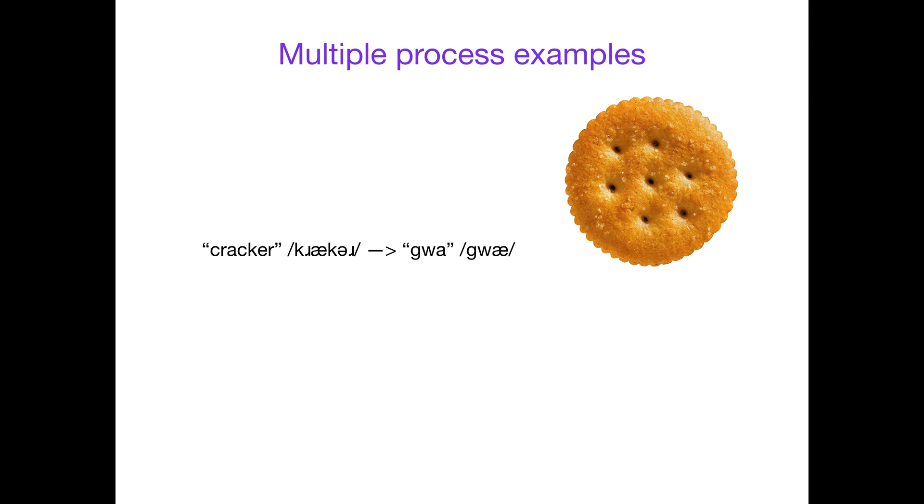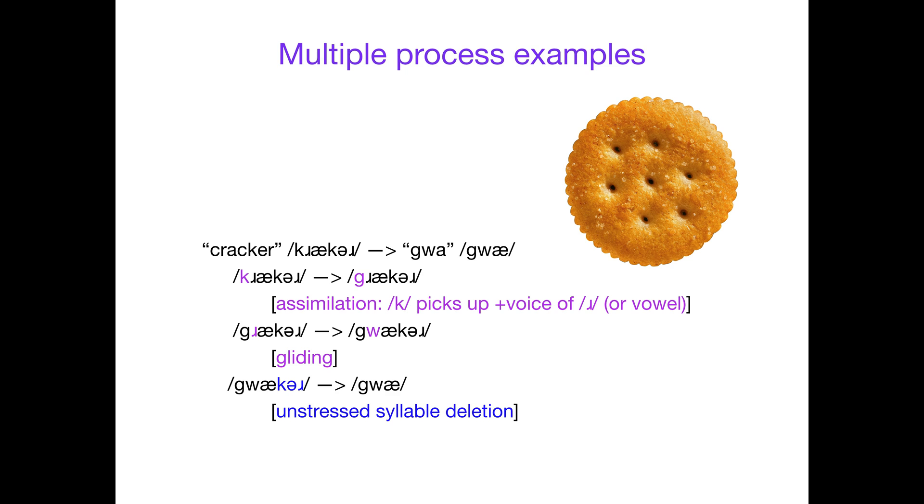And actually one more. We have cracker becoming gwah. What happened here? Ka at the beginning is probably becoming gah. Ka and gah—the only difference between those two sounds, they're both velar stops, but ka is voiceless and gah is voiced. You're going to get plus voice from somewhere. You're going to do that with assimilation. Where can you get it from? You can get it from the ra, or you can get it from any of the vowels, and those are all voiced sounds. You would use assimilation to get from cracker to gracker. Then we want to get from gracker to gwacker. We have the ra liquid becoming a wa glide, so that's going to be due to gliding. Then we're almost there. We're at gwacker and we want to get to gwah. We notice that that syllable is unstressed because we've got that schwa in it. We can delete the entire syllable off, vowel included, with unstressed syllable deletion to get us from gwacker to gwah.